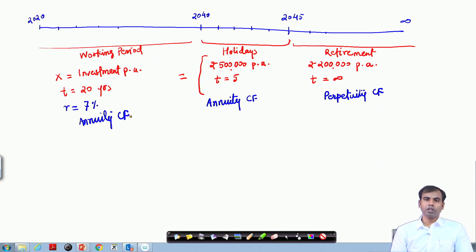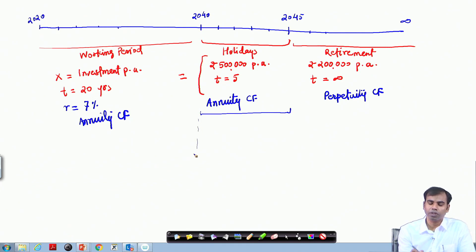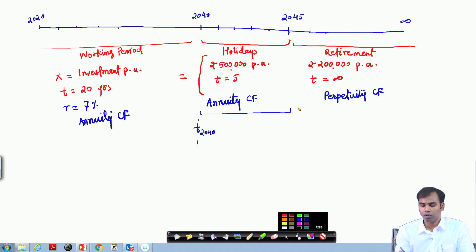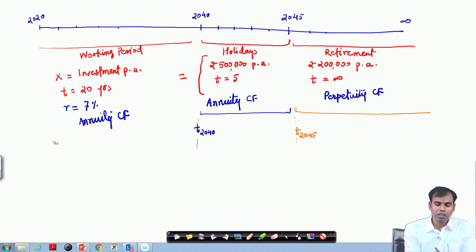When implementing the tools for calculating present value, you need to bring every set of cash flows to a common timeline. The 5 years of holiday cash flows should be calculated at the point T2040, and the retirement cash flows at T2045, with T0 being today.